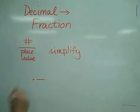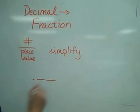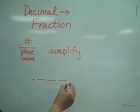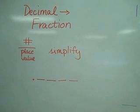You have one place is tenths, two places is hundredths, three places is thousandths, four places is ten thousandths, and so on. So this number will always be either a ten, a hundred, a thousand, ten thousand, et cetera.